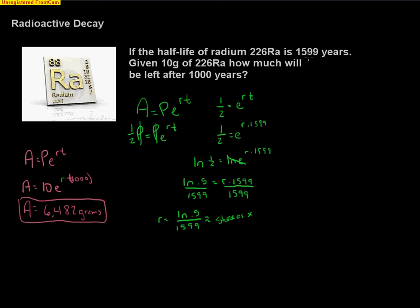Hopefully that makes sense because we know that half of it will go away in 1599 years. If we start with 10 and go 1599 years we'd be at 5, but we want to go a thousand years so it's got to be a little bit more than 5. So 6.482.